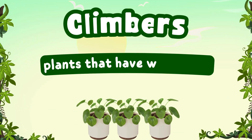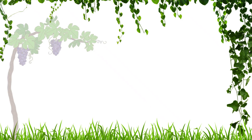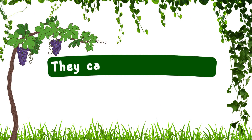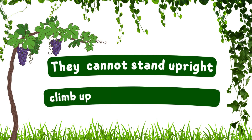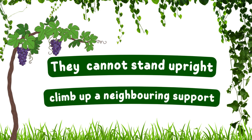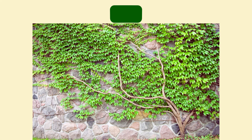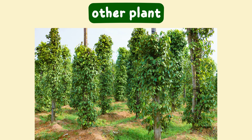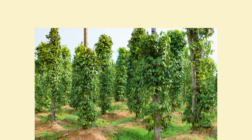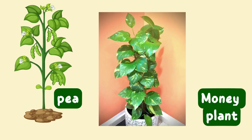Climbers are plants that have a weak stem. They cannot stand upright. They climb up a neighbouring support like a wall, fence or other plant. An example is the money plant.